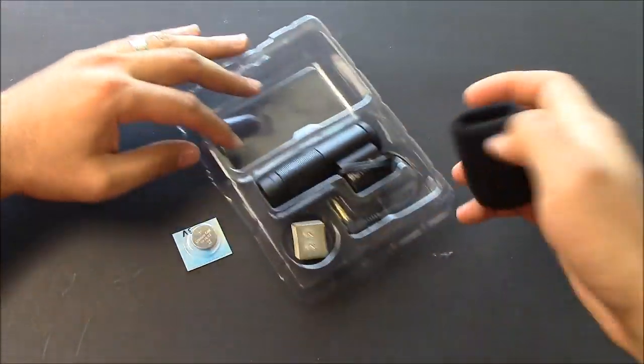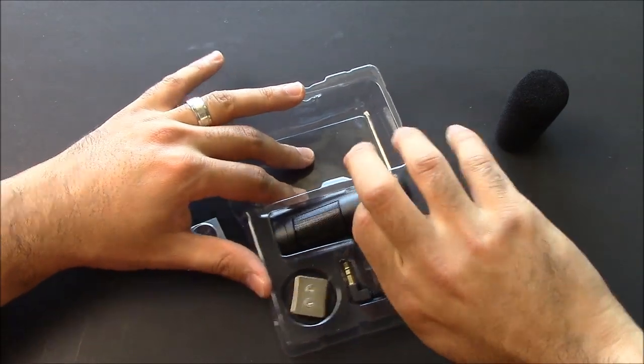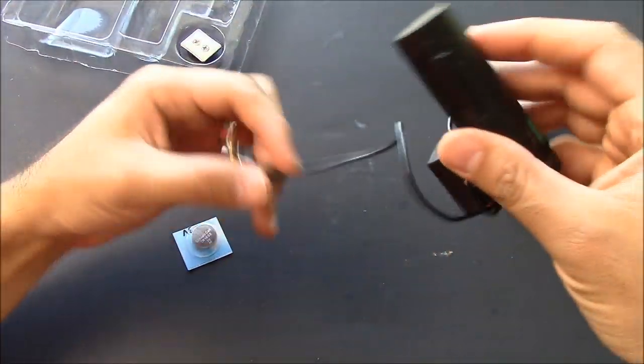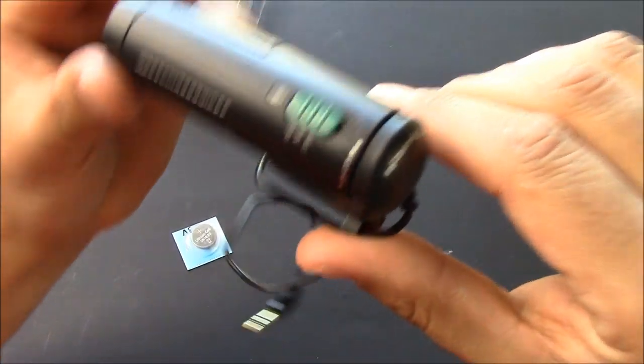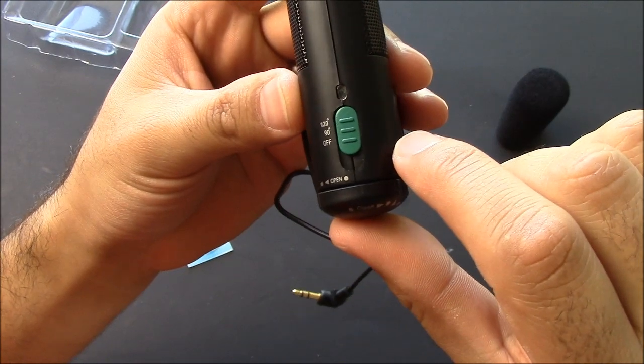Throw that aside and that's your little fuzzy thing for your cover so you don't get all that wind noise. And there's the actual microphone itself, so we've got the 120, 90 degree on-off switch right there.